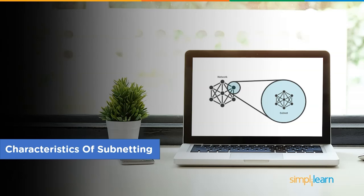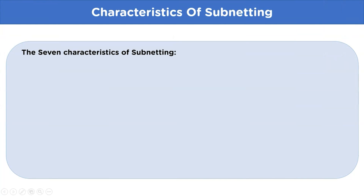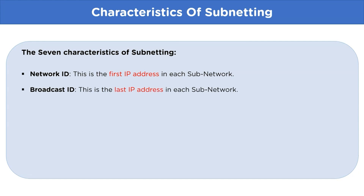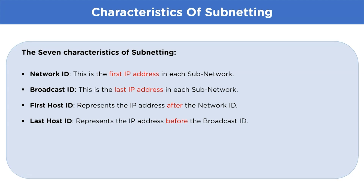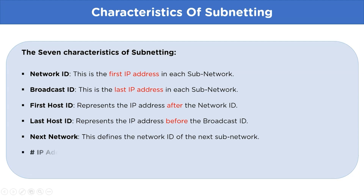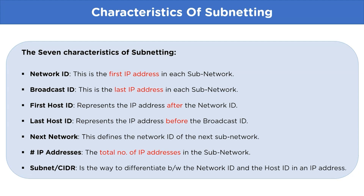Let's look at the characteristics of the subnetting process. First is the network ID, which represents the first IP address in each subnet block. Then we have broadcast ID, which indicates the last IP address of the subnet block. Next is the first host ID — the immediate first IP address after the network ID — and last host ID, which is the IP address just before the broadcast ID. We also have the next network ID, which defines the network ID of the next subnet block, the total number of IP addresses in the subnetwork block, and lastly the subnet mask or CIDR, which represents the network ID and host ID parts of an IP address.